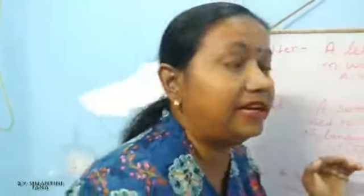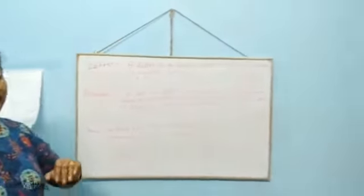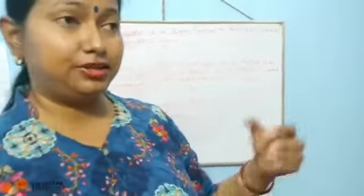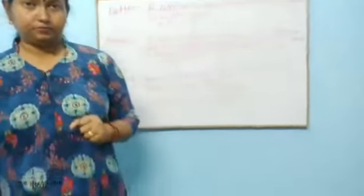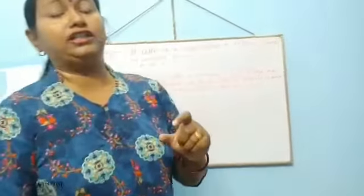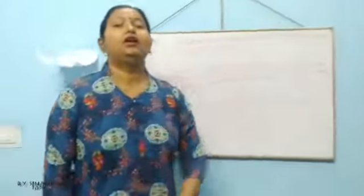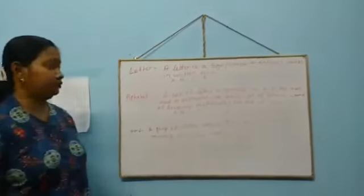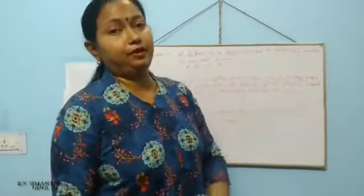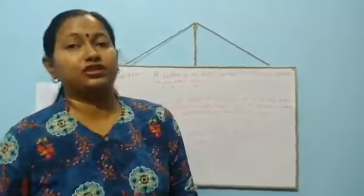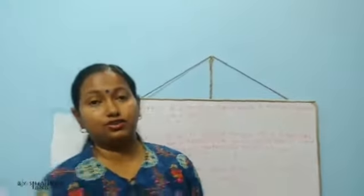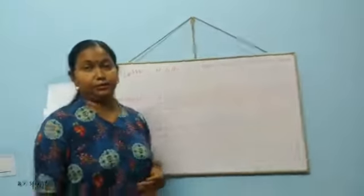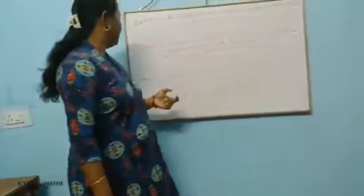This set of letters and symbols in order is called the alphabet. We can get two types of alphabet, which you have already learned in your previous classes: vowels and consonants. A, E, I, O, U — you may know that all these are the vowels, and the rest of the letters are called consonants. These are all part of the alphabet.